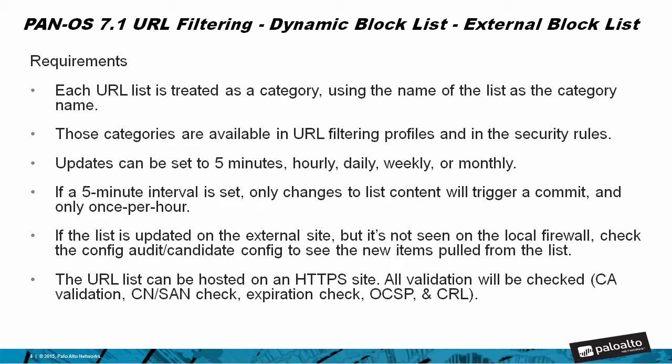The requirements for the dynamic block list: each URL list is treated as a category using the name of the list as the category name. Those categories are available in URL filtering profiles and in the security rules.